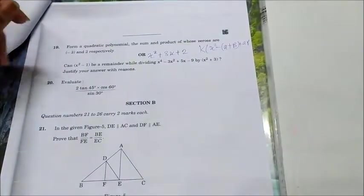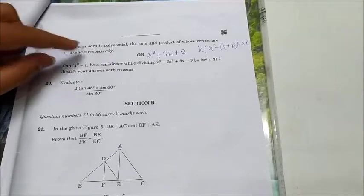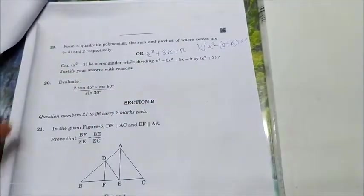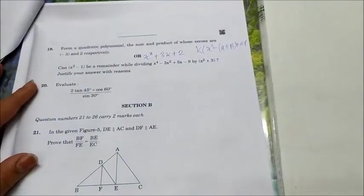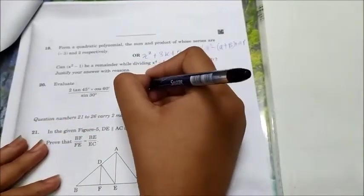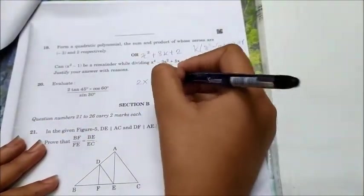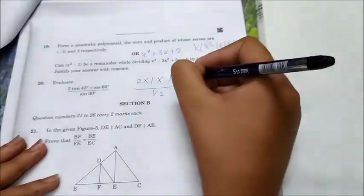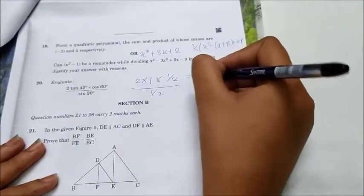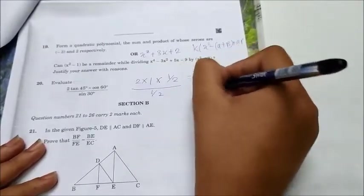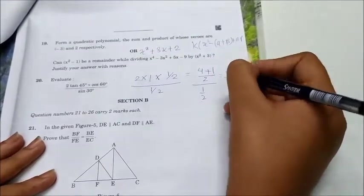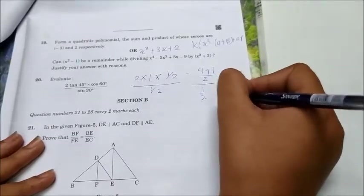And for this you need to divide x⁴ - 3x² + 5x - 9 by x² + 3 and you need to show that. Okay, now evaluate: You need to evaluate this. So 2 × tan 45 is 1 × cos 60 is 1/2 upon sin 30 is 1/2, which will give us 4 + 1/2 upon 1/2, which will give us 5/2 × 2/1. Therefore 2 and 2 will get cancelled and the answer is 5. So this was the solution for Section A.